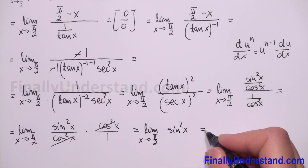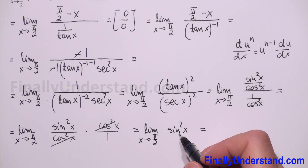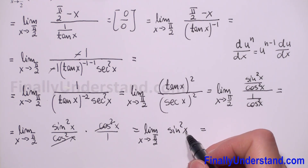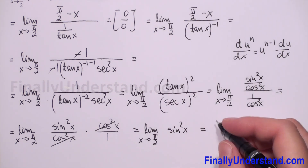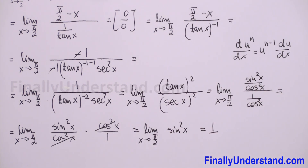When x approaches pi over 2, sine of pi over 2 equals 1. So 1 squared is 1, and the final answer is 1.